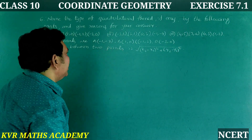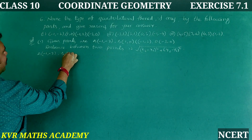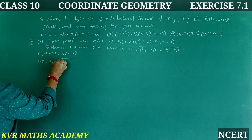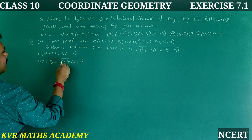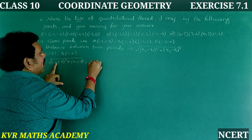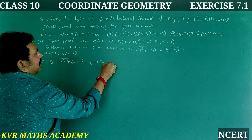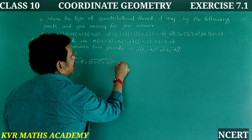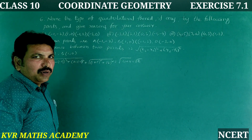Let us find the distance AB. A is (-1, -2) and B is (1, 0). AB = root of (1 minus (-1)) whole square plus (0 minus (-2)) whole square. That is root of (1+1) whole square plus (0+2) whole square = root of 2 squared plus 2 squared = root of 4 plus 4 = root 8.